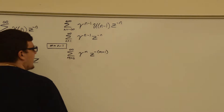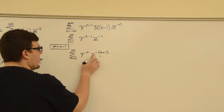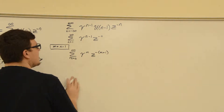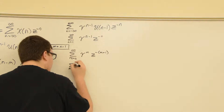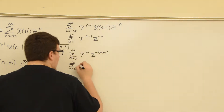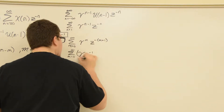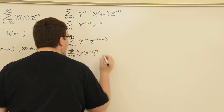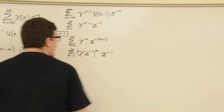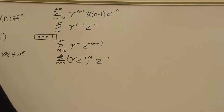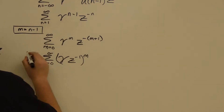From here, we're going to group our terms so that we have them all to a common index. We rewrite it as the sum from m equals 0 to infinity of gamma Z inverse to the m, and then we have this extra Z inverse term out front. Since that Z inverse term does not depend on m, we can pull it out of the summation as a constant multiplier.